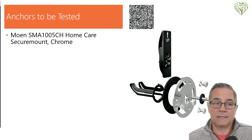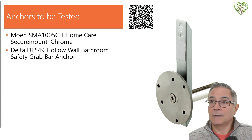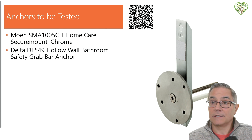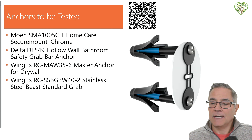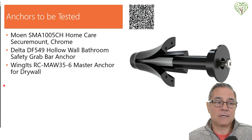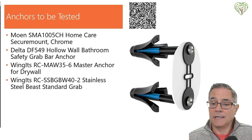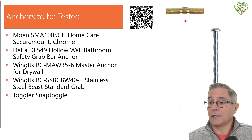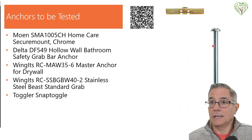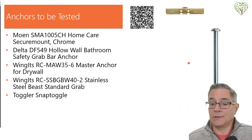The anchors we're testing include: the Moen anchor system — aluminum plates and flanges that mount in the wall for the grab bar to connect to. We're also testing the Delta anchor system, which works similarly. Then we're testing wingots in two different configurations. And we're testing the toggler bolt. One important note on the toggler: since this is going in a bathroom, always use rust-resistant, stainless steel machine screws. The toggler uses a quarter-20 thread, so make sure you get the proper stainless bolt to prevent rusting.